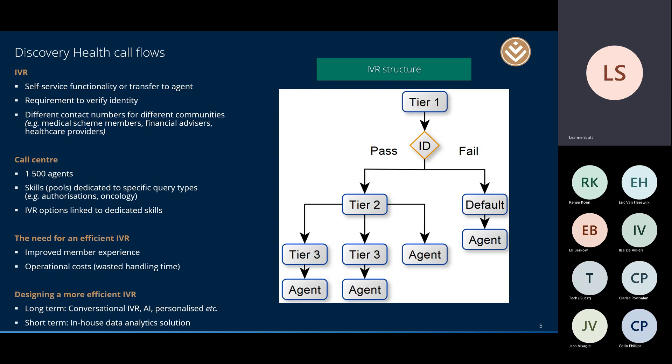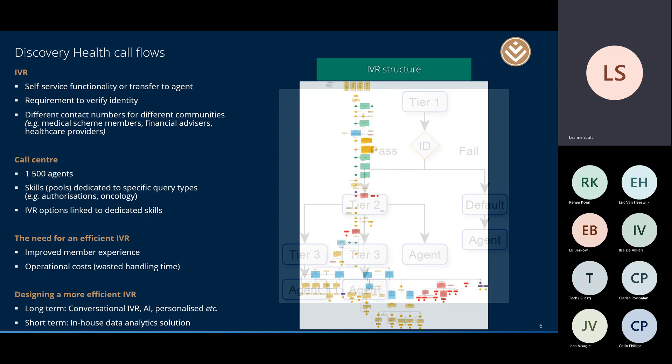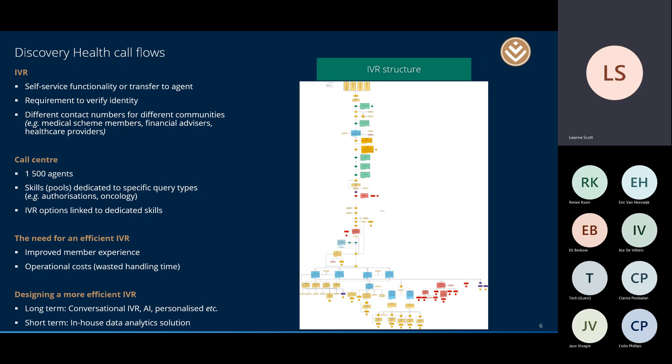At a high level, the IVR structure is like a tree — many different tiers, each representing a menu where you exercise an option, and you ultimately get routed through to an agent or you can do some self-service. But in reality it's much more complex when you consider everything that happens in the background that you as a caller would not even know about.